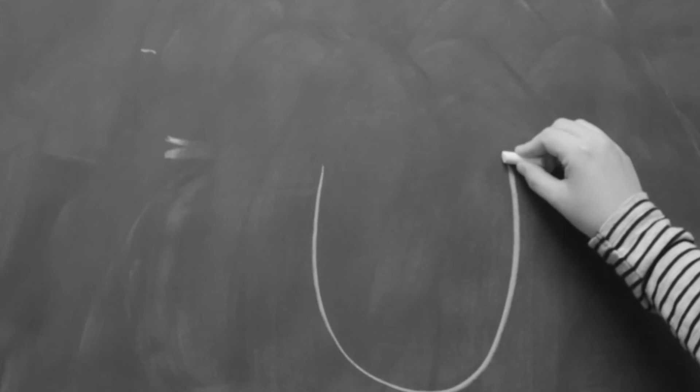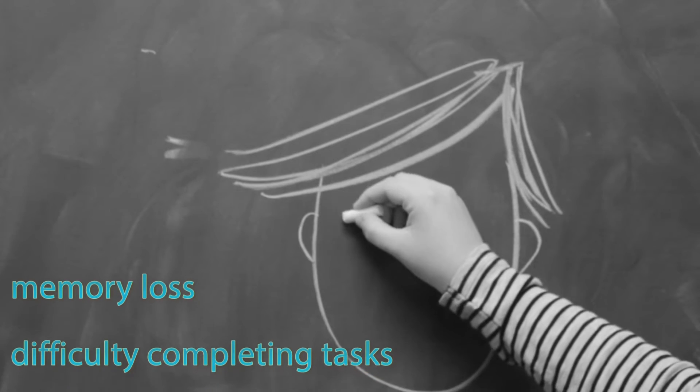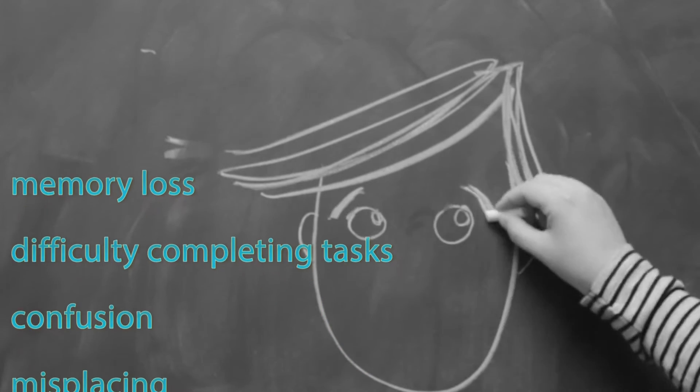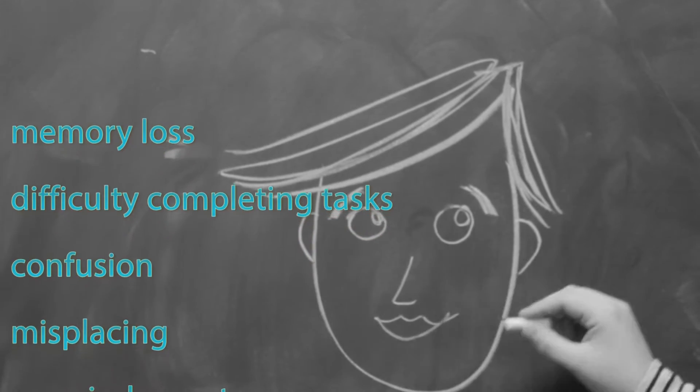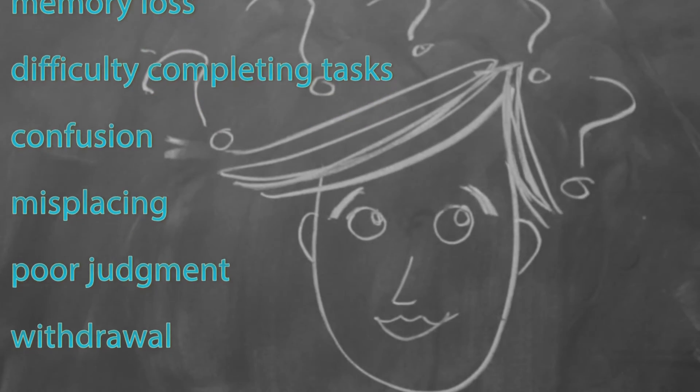There are also many warning signs for diagnosing early Alzheimer's. These include memory loss, difficulty completing familiar tasks, confusion with time and place, misplacing things, decreased or poor judgment, withdrawal from social activities, and changes in mood and personality.